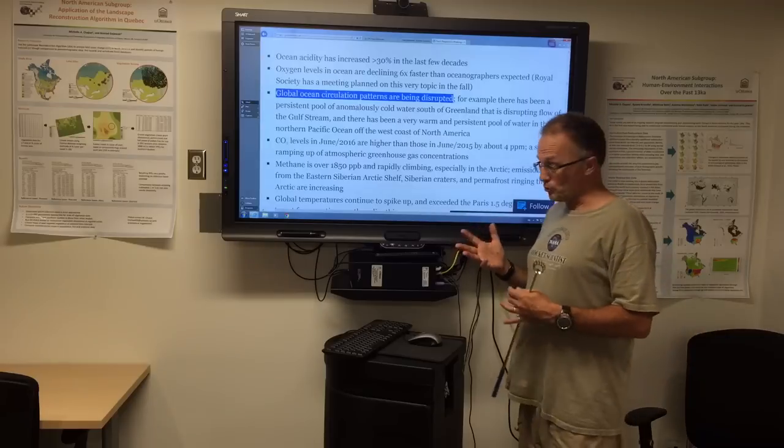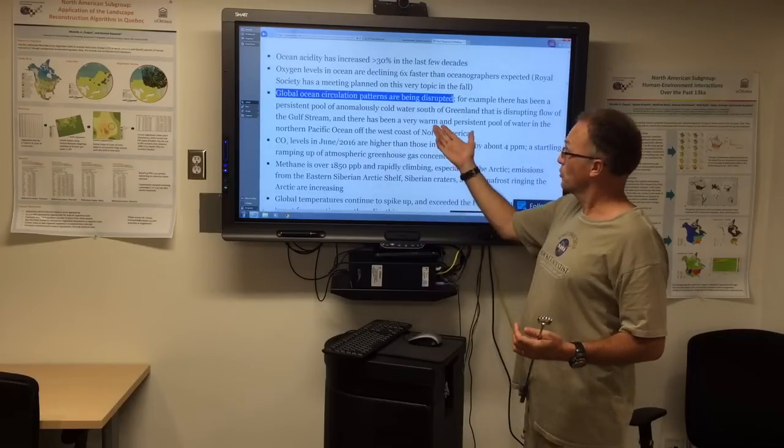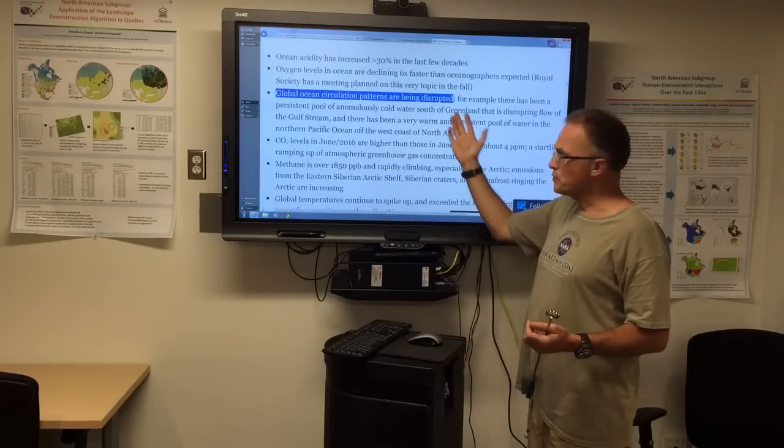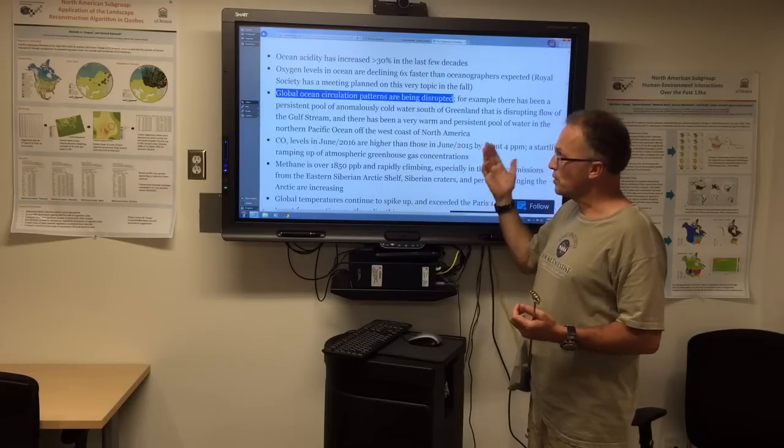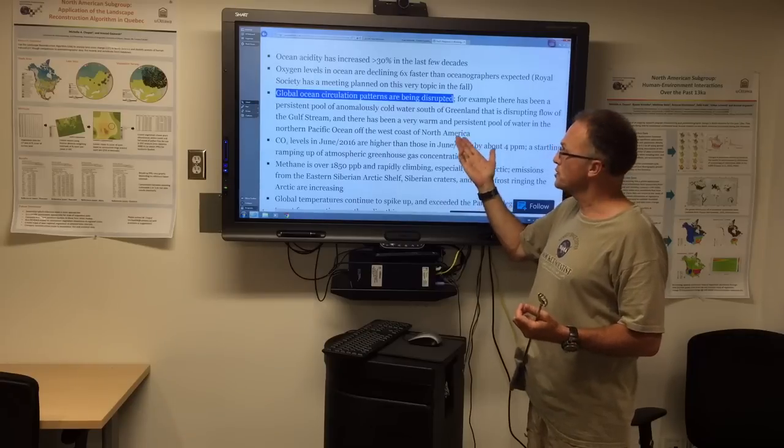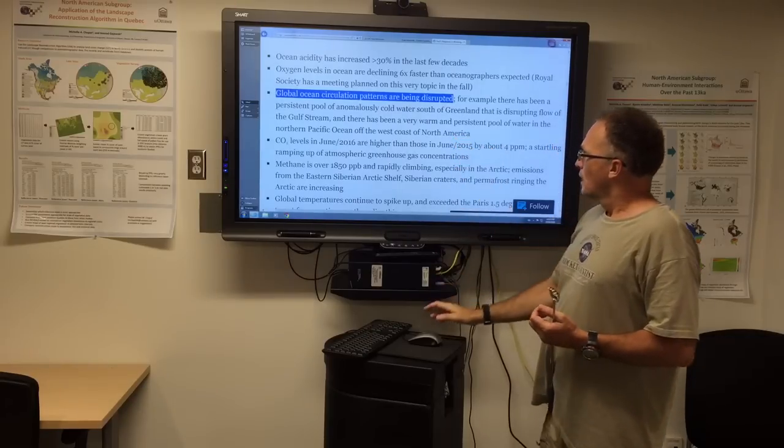So we're seeing also extremely warm waters off the east coast of the US. So we've disrupted the atmospheric patterns, the jet streams. We've also disrupted the ocean circulation patterns.